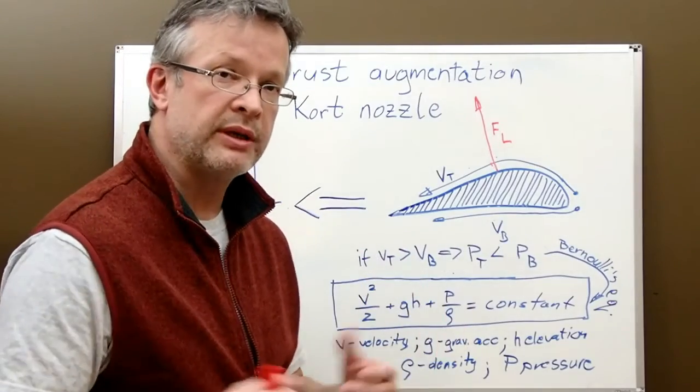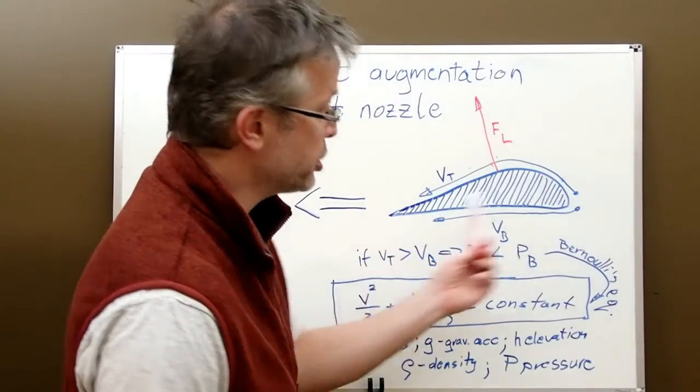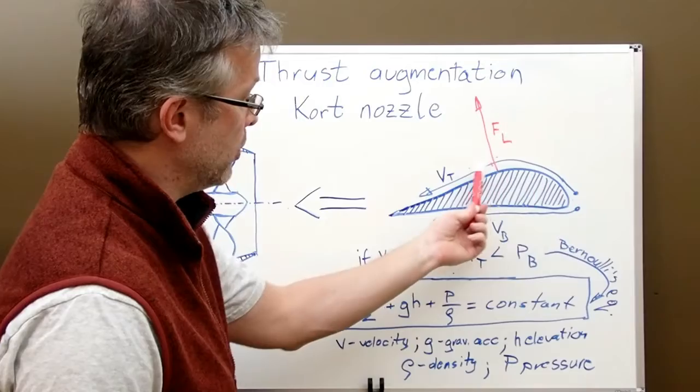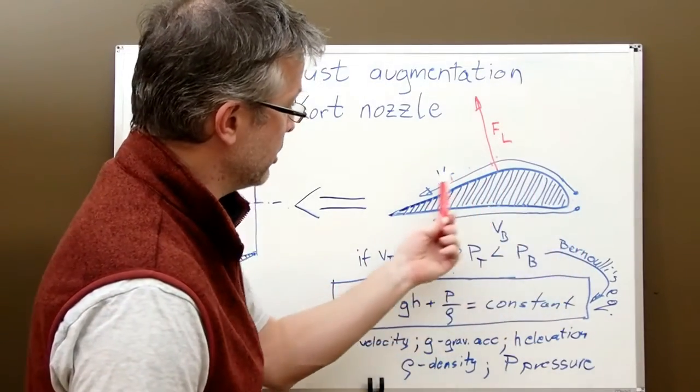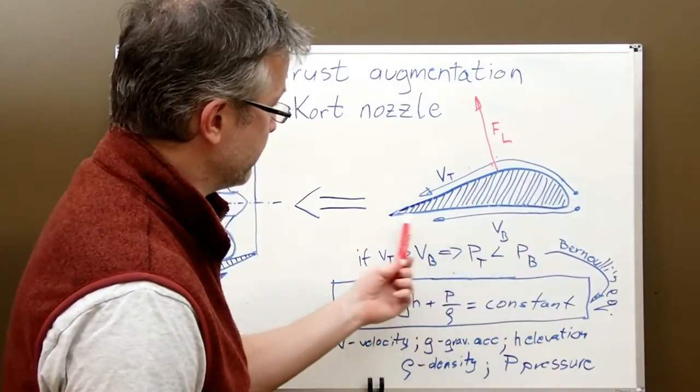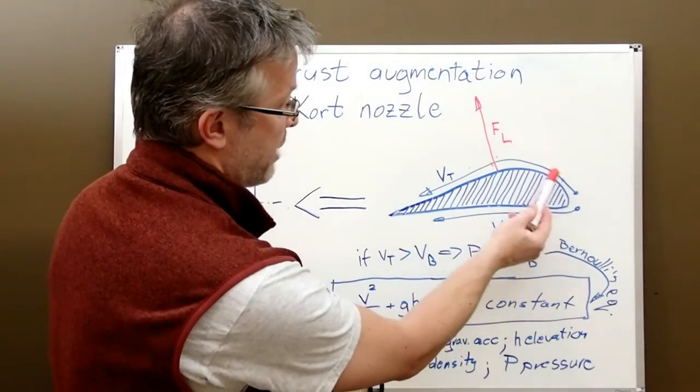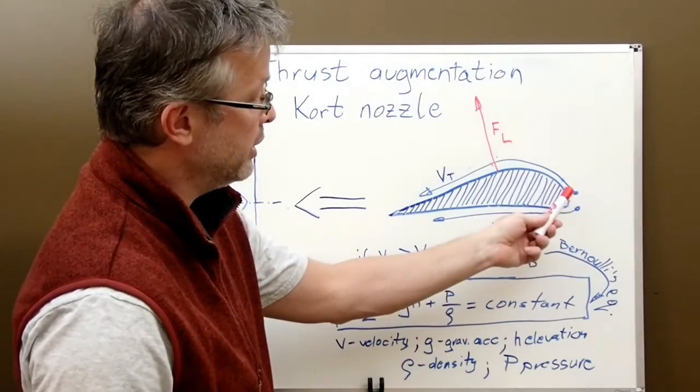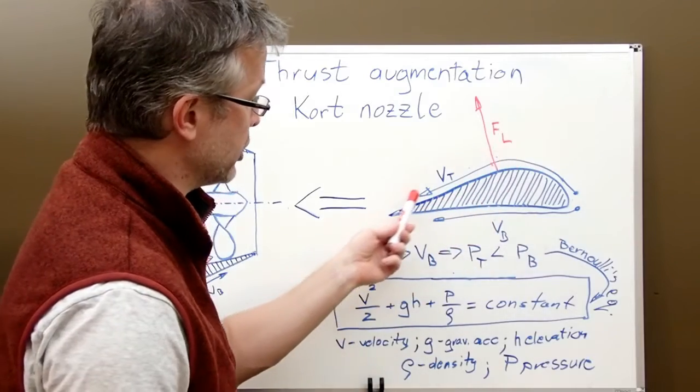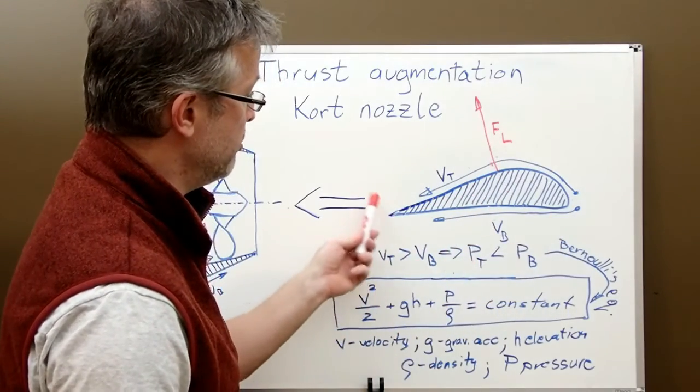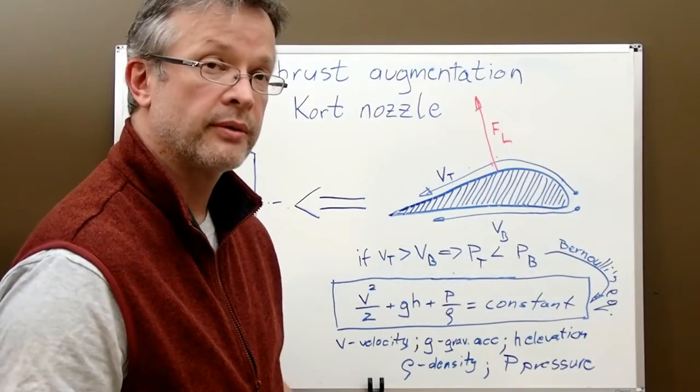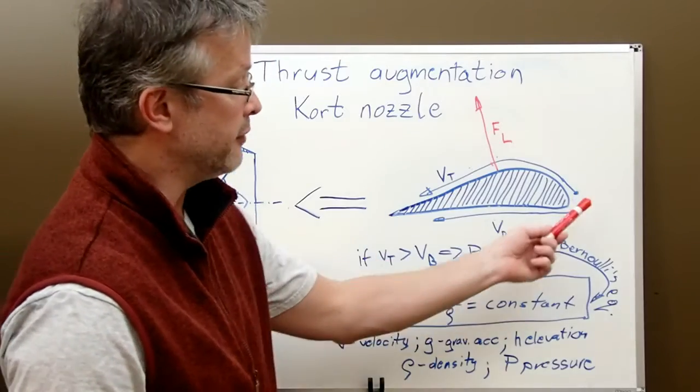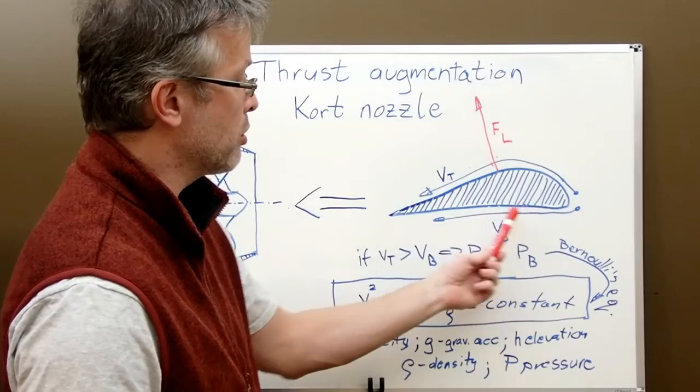So let's see what happens when we push it through the water. The fluid is going to flow along those lines here on the top and on the bottom. Because this pathway is longer than this one, this fluid needs to flow here a little bit faster than here in order to meet at the trailing edge here. So what's the consequence of this situation? Faster flow here and slower flow here?